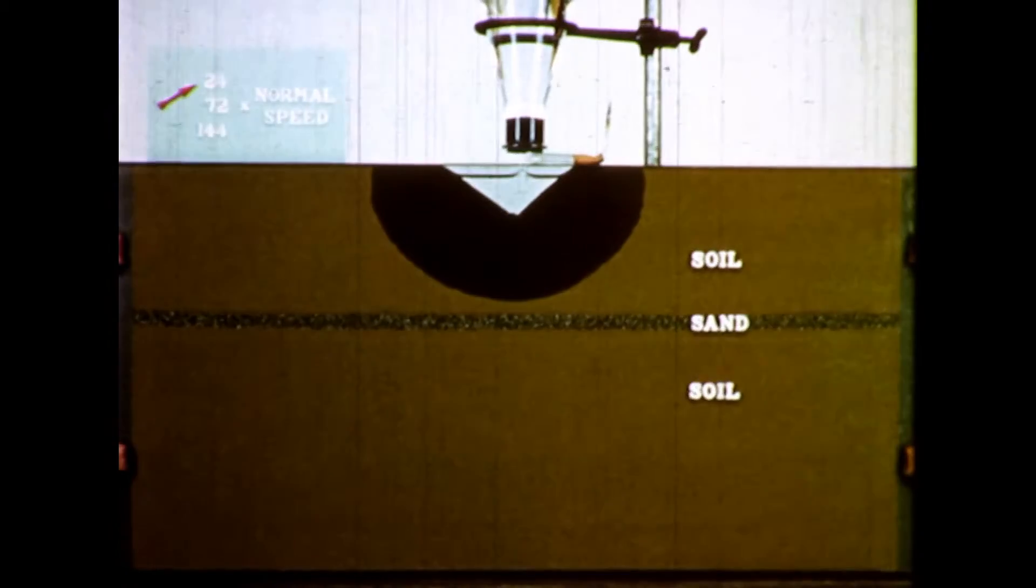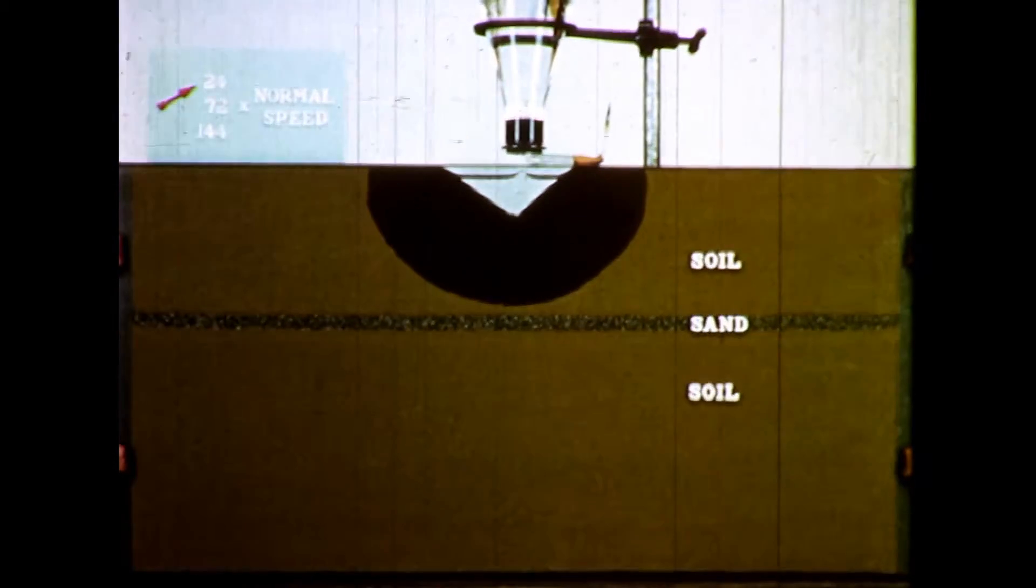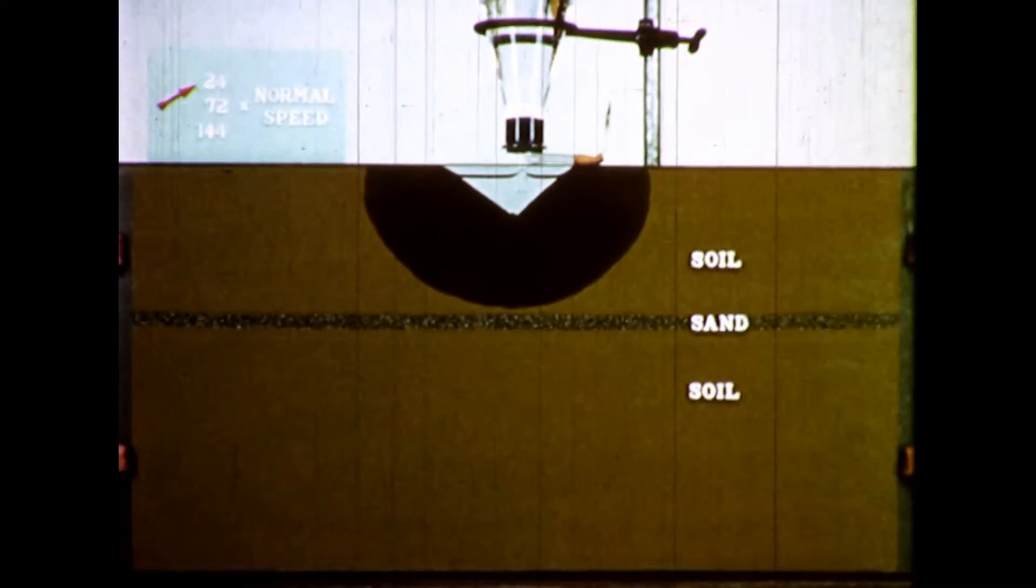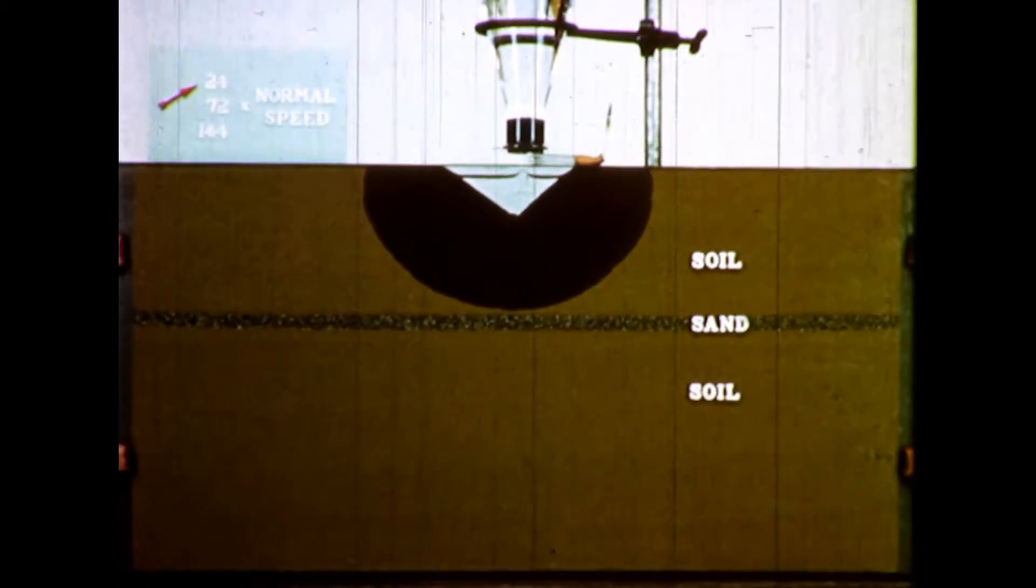The horizontal layer you see is coarse sand. One of the important principles of unsaturated flow is described as you witness what happens when the wetting front encounters this layer of coarse sand.